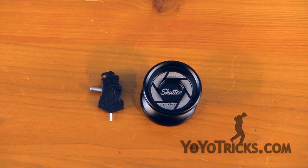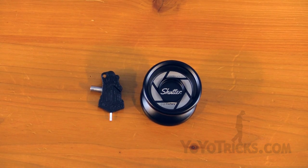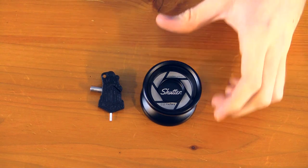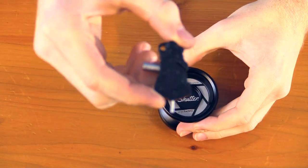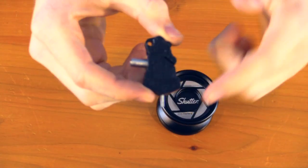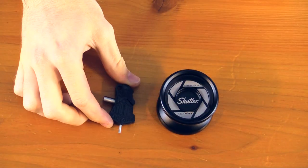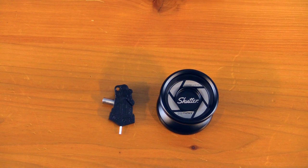In this video, we will be showing you how to take a large C-sized bearing out of most yoyos. In this case, we'll be using the Yoyo Factory Shutter and the Yoyo Factory Multi-Tool, which includes an axle removal tool, a bearing removal tool, and a string cutter. You can find all these products on yoyotricks.com.